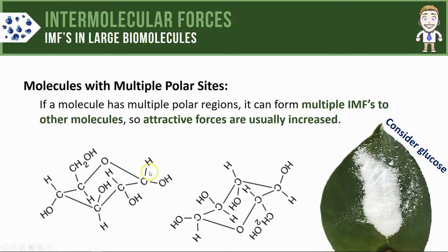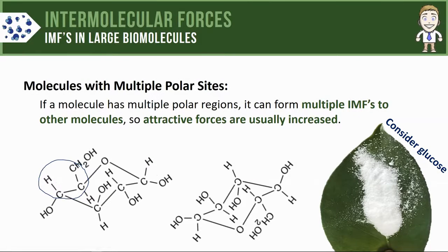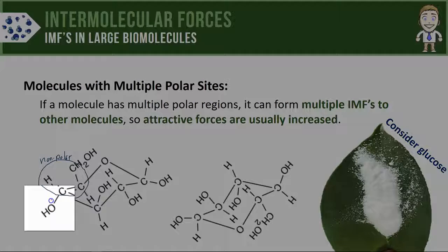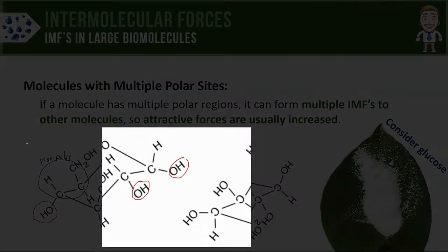To show what this looks like, let's consider two glucose molecules. These glucose molecules are giant, so it doesn't make sense to call them simply polar or nonpolar. A region made of carbon bonded to hydrogen atoms — where the electronegativity difference is relatively small — might be considered nonpolar. Other areas containing hydrogen bonded to oxygen have a very large electronegativity difference, making those regions more polar. There are multiple such polar regions visible on these molecules.